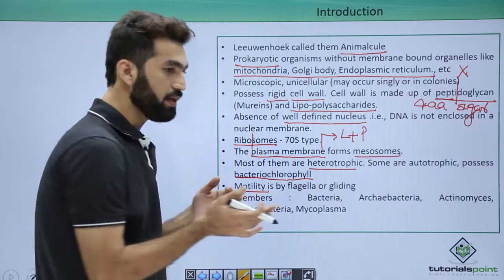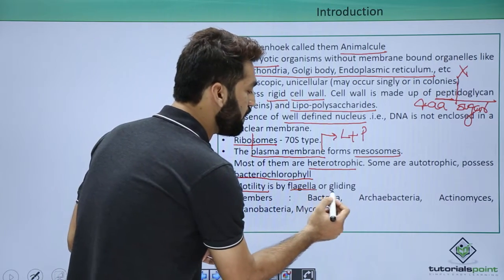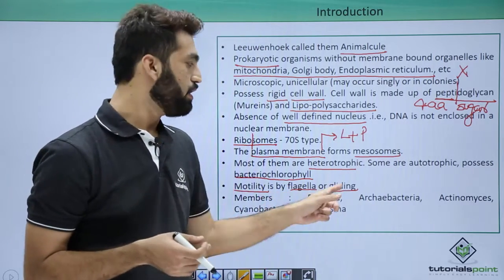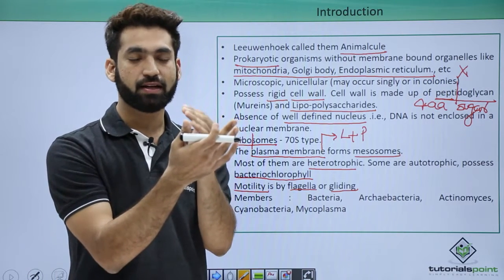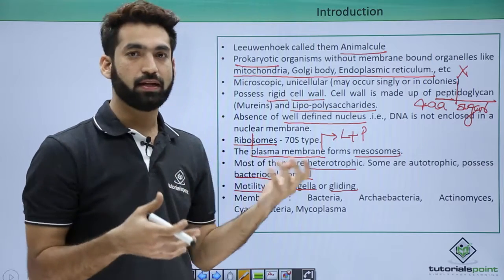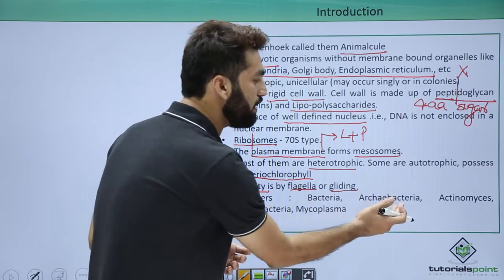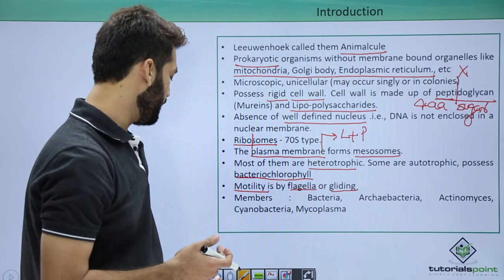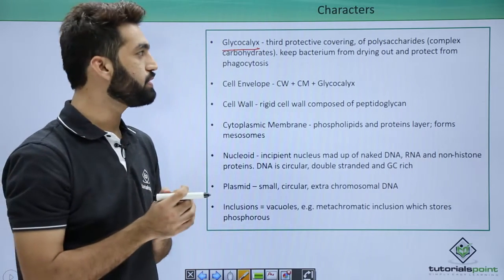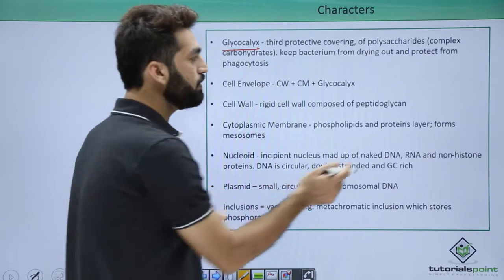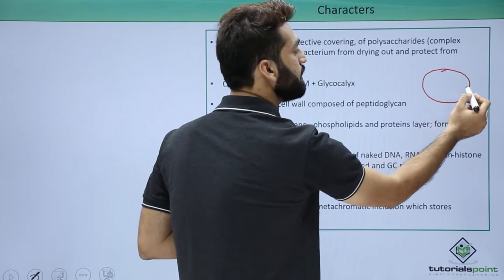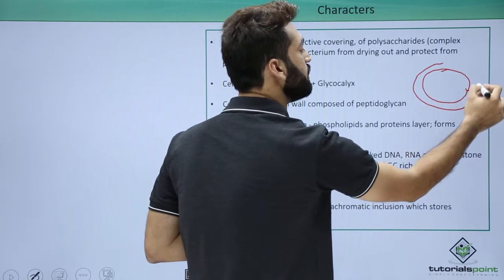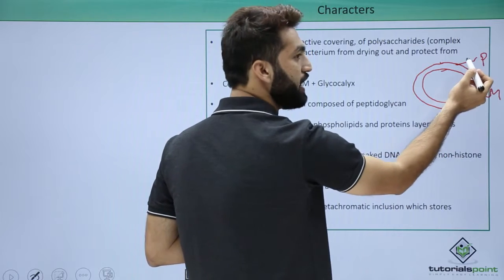Motility means movement from one place to another, and this is done with the help of flagella or gliding movement. Members of Kingdom Monera include bacteria, archaebacteria, actinomycetes, cyanobacteria, and mycoplasma. The glycocalyx layer is present in some members outside the peptidoglycan layer. The cell membrane is lipoproteinaceous. After the cell membrane there is the peptidoglycan layer, and some bacteria have a third layer which is the glycocalyx layer.